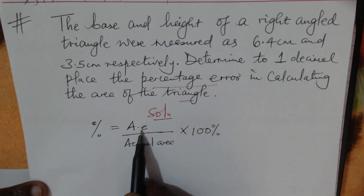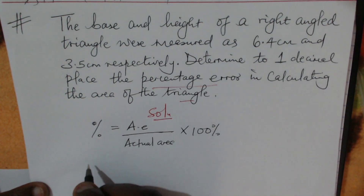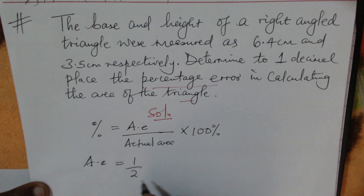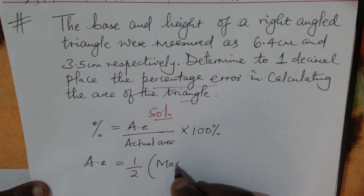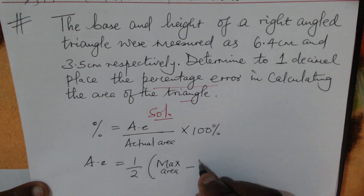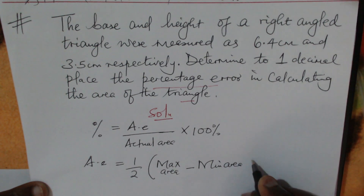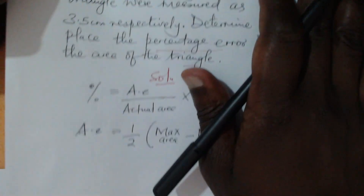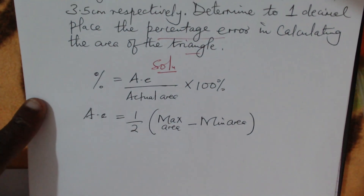How do we get the absolute error in calculating the area of this triangle? The absolute error in calculating the area is given by: one half multiplied by the maximum area minus the minimum area of this triangle. Now how do we get the maximum and the minimum area? We need to get the limits.